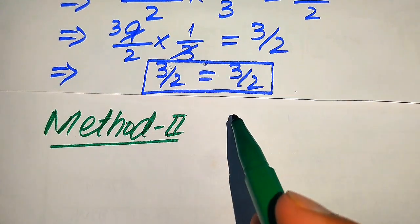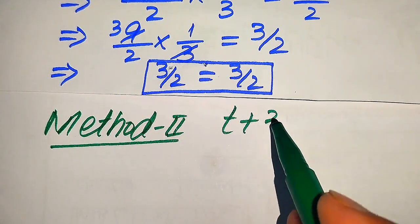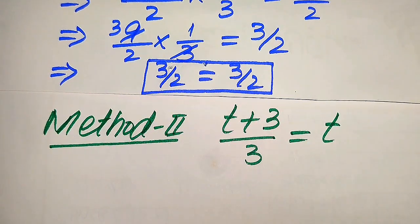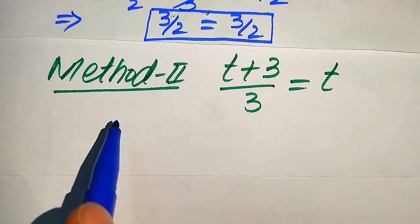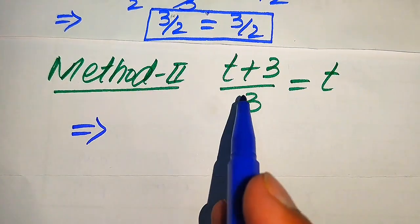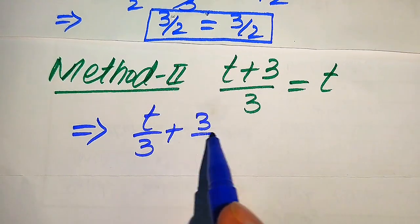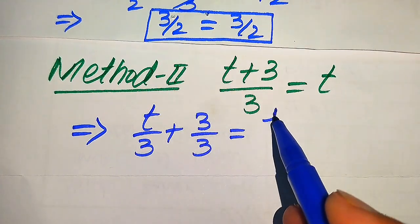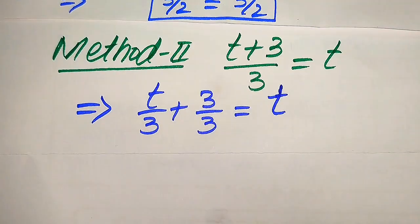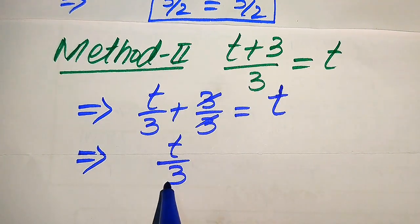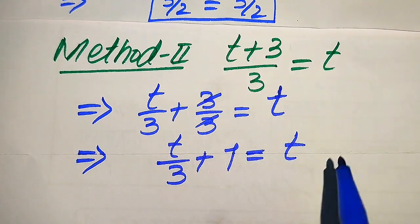In the second method we copy down the given equation: t plus 3 divided by 3 equals t. We solve using another technique. We first break the fraction, writing it as t over 3 plus 3 over 3 equals t. The 3s cancel, giving t over 3 plus 1 equals t.